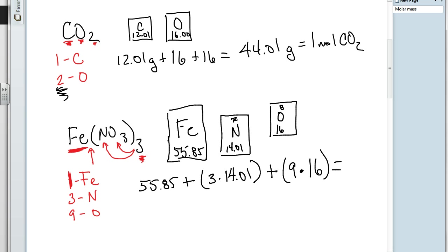Close my parentheses, and I hit equal. So, I'm going to get the answer of 241.88 grams, which is the molar mass of iron 3 nitrate. And that is going to be equal to one mole of iron 3 nitrate.